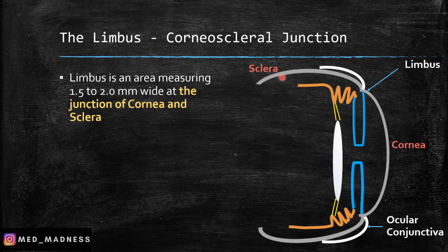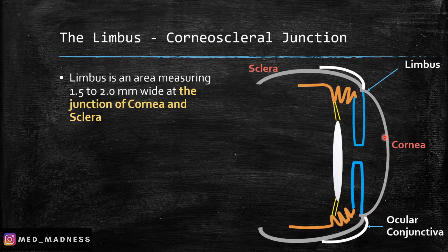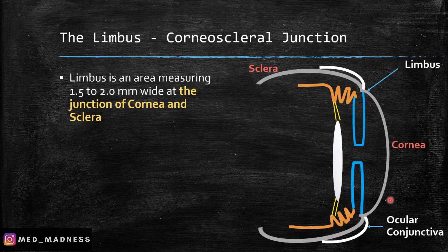Here I have drawn the sclera, which is the outermost portion of the eyeball. This is going to continue anteriorly as the cornea, which is a transparent zone through which light enters. The limbus is at the junction of the cornea and the sclera. There is also a transparent membrane covering the anterior portion of the sclera, which is called the conjunctiva — specifically the ocular conjunctiva.